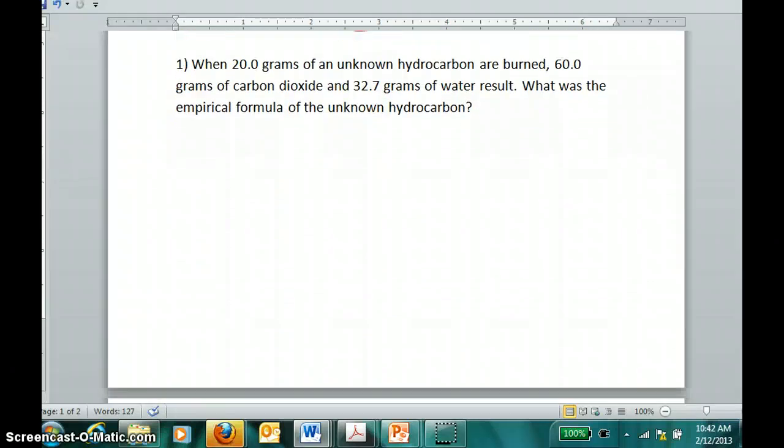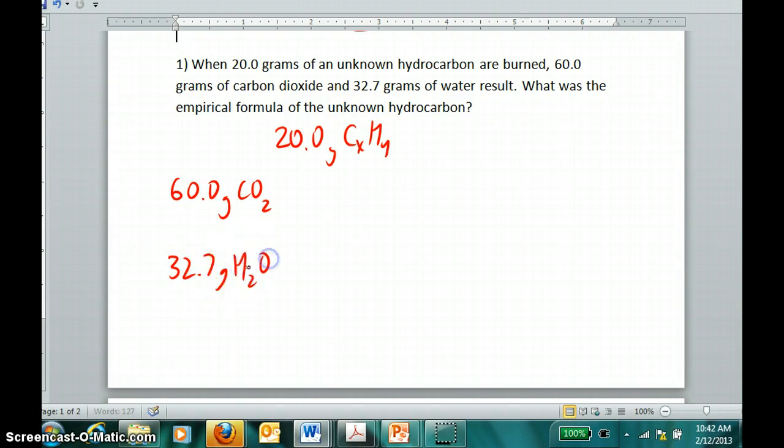By way of an example, if we have 20 grams of an unknown hydrocarbon and they're burned in combustion analysis, and we get 60 grams of carbon dioxide which contains all the carbon that was in the original sample, and we get 32.7 grams of water, all of which hydrogen came from this original sample, we can find how much carbon and how much hydrogen there were.